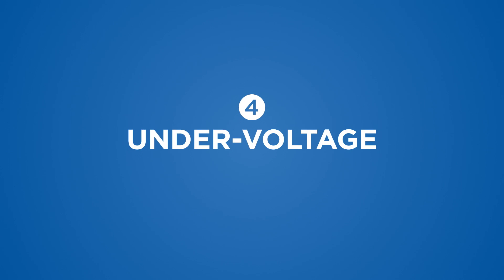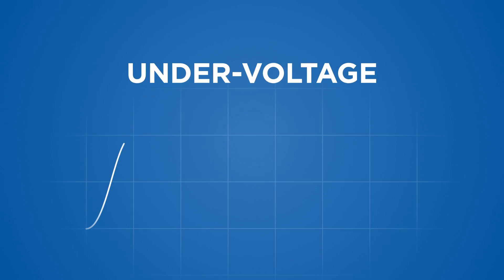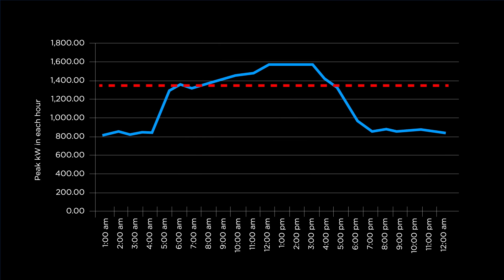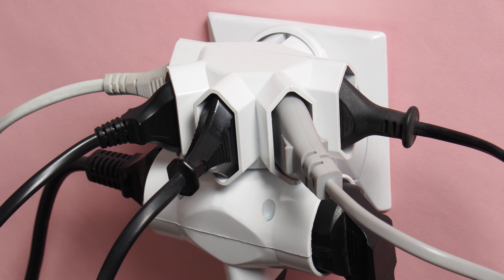The next two types of power problems are under voltage, or brownout: reduced line voltage for extended periods of a few minutes to a few days. This can be caused by intentional utility voltage reduction to conserve power during peak demand periods, or other heavy loads that exceed supply capacity.